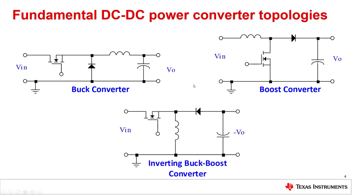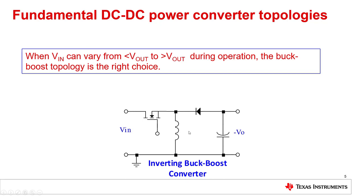And the third basic topology is the inverting buck-boost converter. It uses exactly the same components: transistor, diode and inductor. But here the advantage is that the output voltage can be bigger or smaller than the input voltage. The only difference to the other two basic topologies is that the output voltage is negative compared to the input voltage.